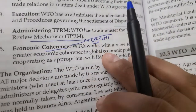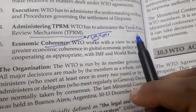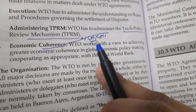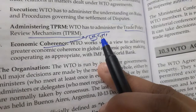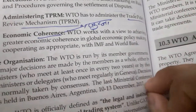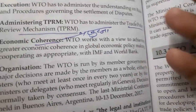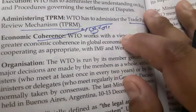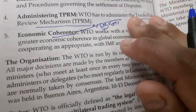The third function is administrating TRIPS — WTO also administers the Trade Policy Review Mechanism. The trade policies set up by WTO are reviewed regularly. If any changes are needed, WTO makes the announcement for those changes.